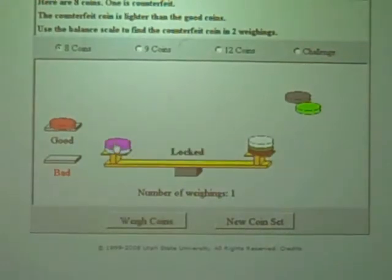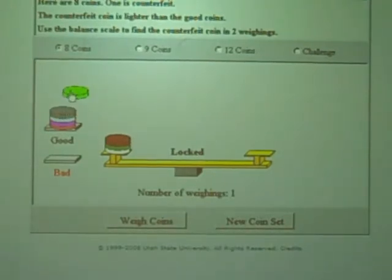So that makes these coins not counterfeit. So one of the counterfeit coins must be one of these 3 here. So we know these probably are not counterfeit because the one that's counterfeit is in here.